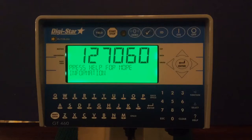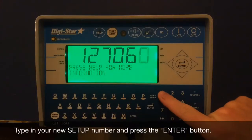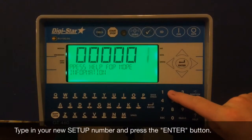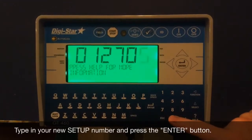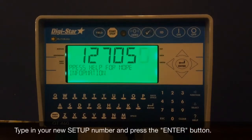Go ahead and type in your new setup number. Simply use the keypad and type it in. For example, we're going to change the setup number to 127050 and then we're going to press the enter button.